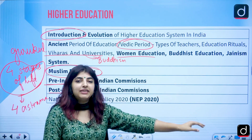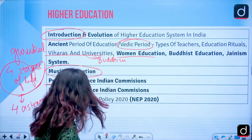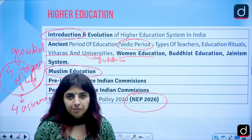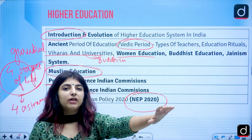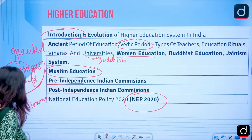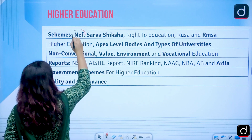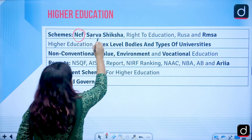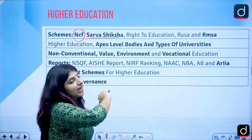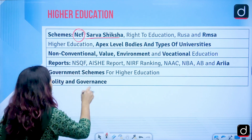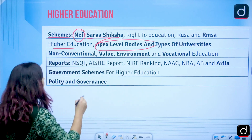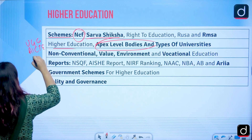National Education Policy 2020 will be covered — who drafted it, its salient features, and what various countries have adopted from it. Related schemes like NCF (National Curriculum Framework), Sarva Shiksha Abhiyan, Right to Education, RUSA (Rashtriya Uchchatar Shiksha Abhiyan) and RMSA (Rashtriya Madhyamik Shiksha Abhiyan) will be addressed. Higher education apex bodies like UGC, AICTE, and Bar Council of India will also be covered.